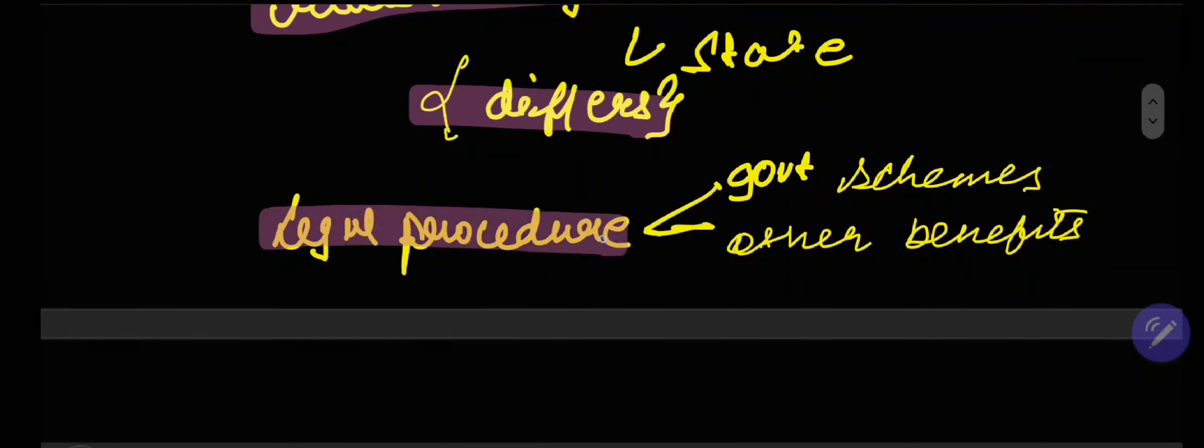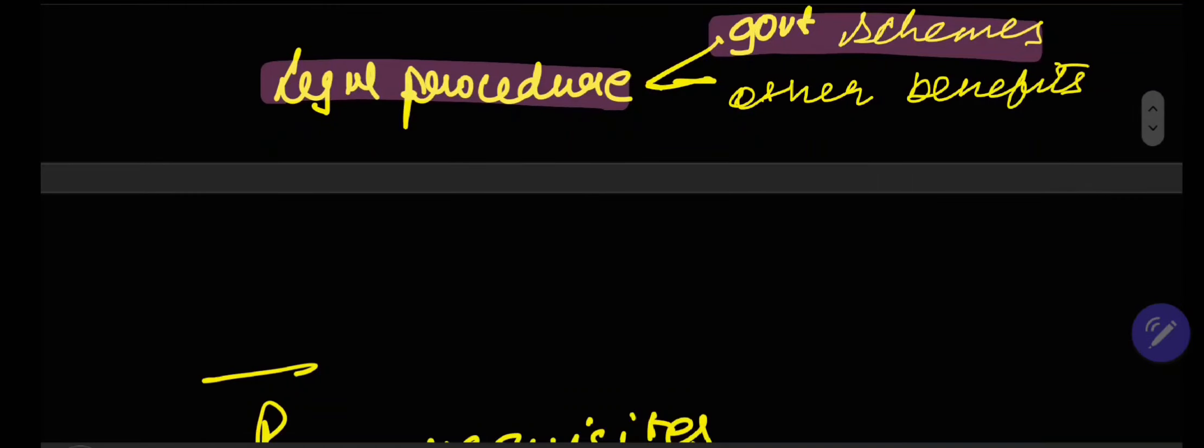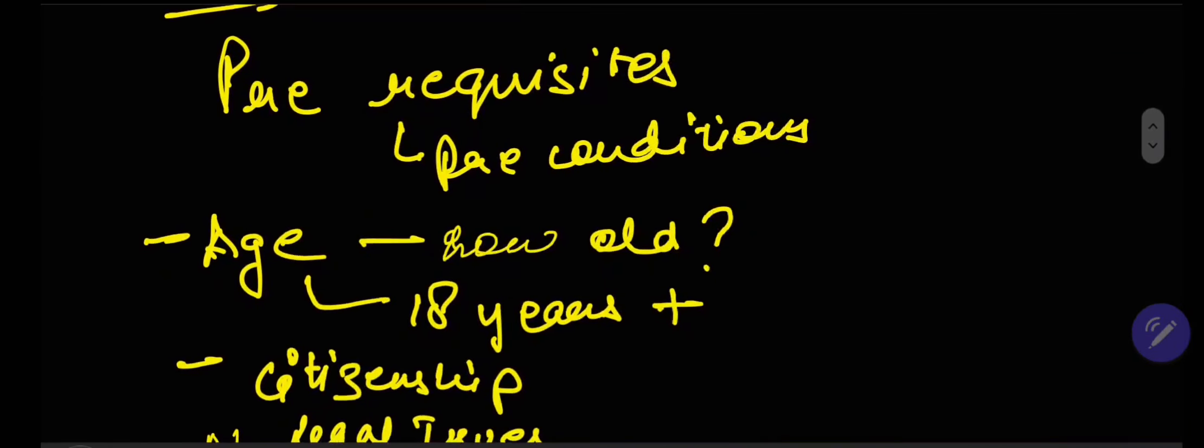Now, you might have a question: why do we need a legal procedure to change our names? Why can't I just go around and tell my family that from tomorrow you can call me whatever, your new name? And just inform the people that I know. Why do I need to follow a legal procedure? Basically, the importance of following a legal procedure lies in the fact that when you follow a legal procedure to change your name, then you can avail benefits of government schemes and whatever other benefits. Because when you change your name legally, then it is recognized by the government and it will be a less chaotic process and you can smoothly enjoy the benefits of the government, like whatever the schemes are.